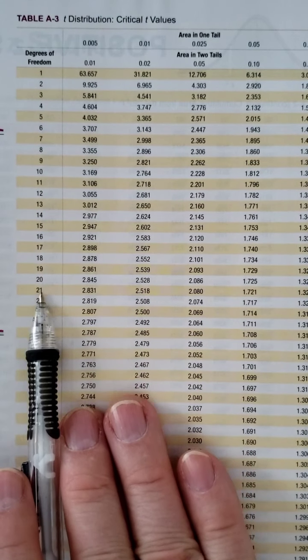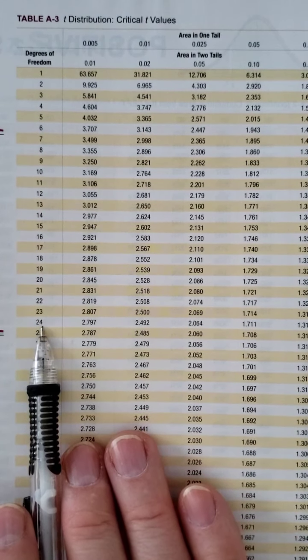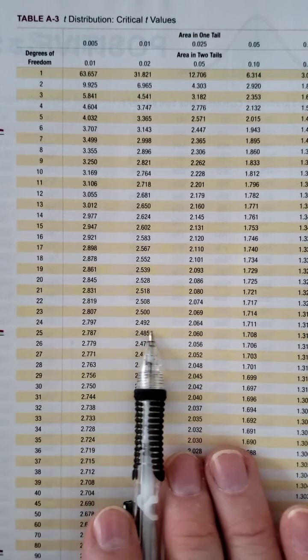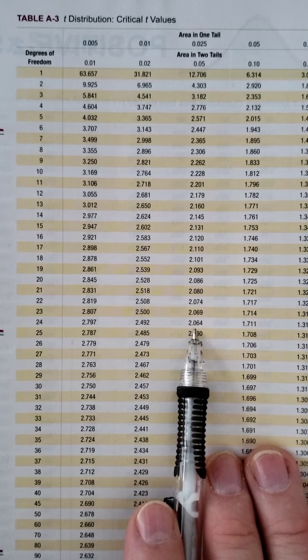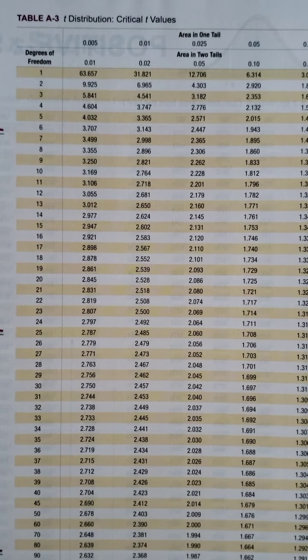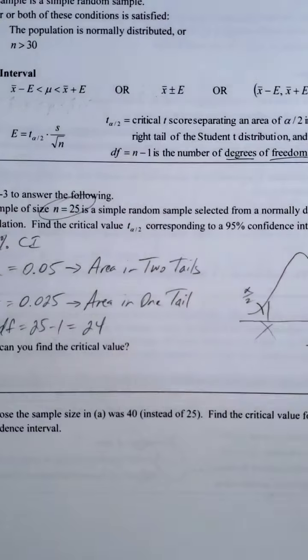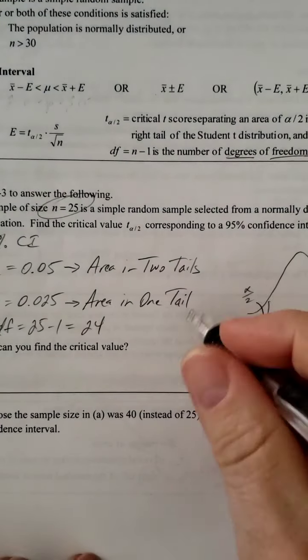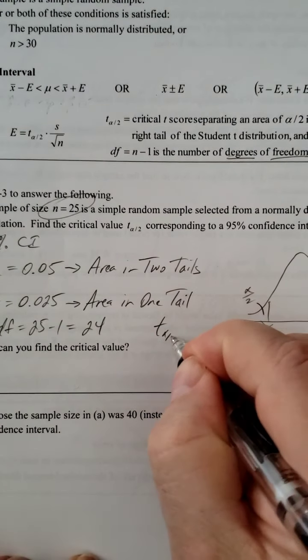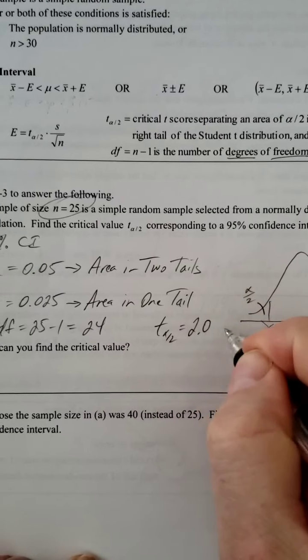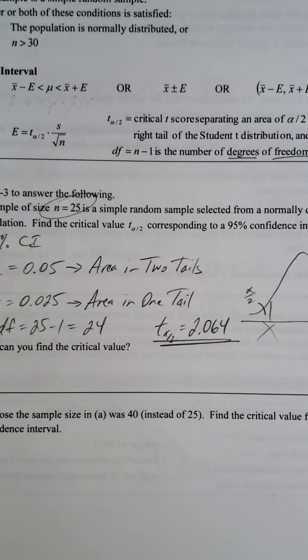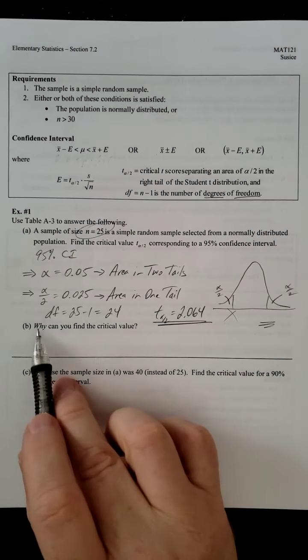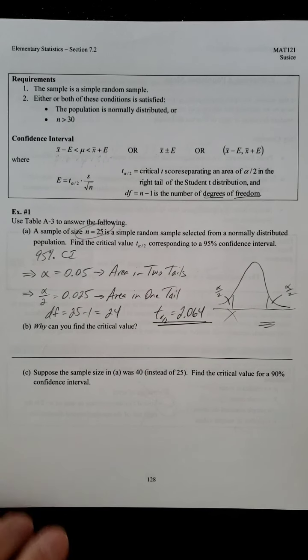So, if we cross-reference, we can see we get 2.064. Done. That's your T-score for this particular problem. So, T sub alpha over 2 is 2.064. That's your answer. Now, the second part of the question says, Why can you find the critical value?